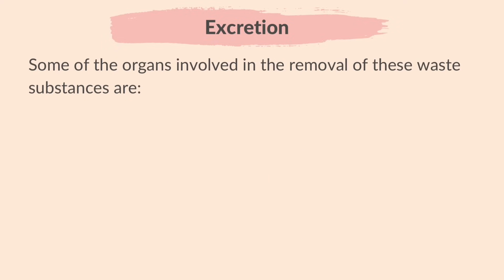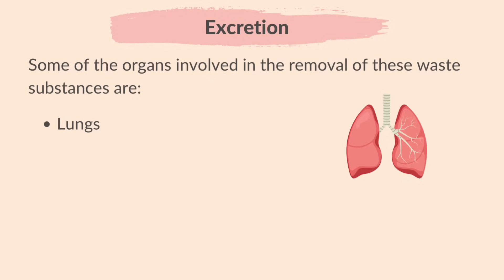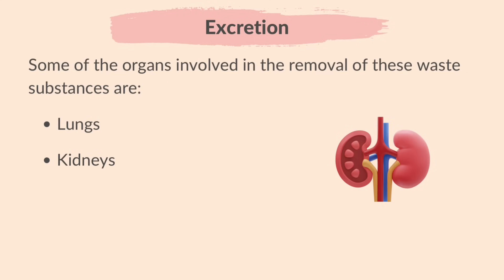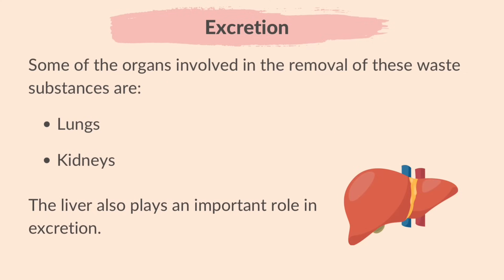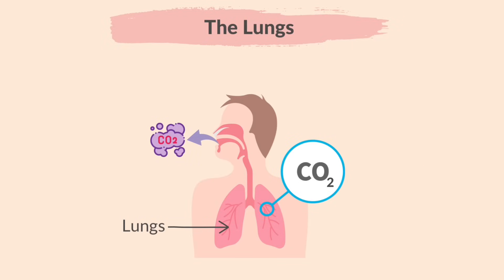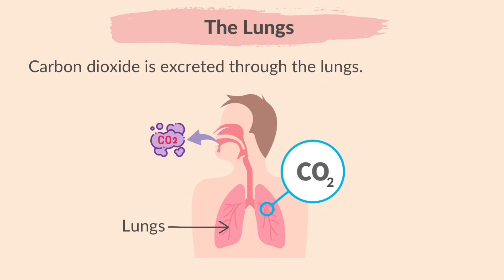Some of the organs involved in the removal of these waste substances are the lungs and kidneys. The liver also plays an important role in excretion. Carbon dioxide is excreted through the lungs — it is a waste product produced in cells during respiration. The blood carries this waste product to the lungs, from where it is excreted out of the body.